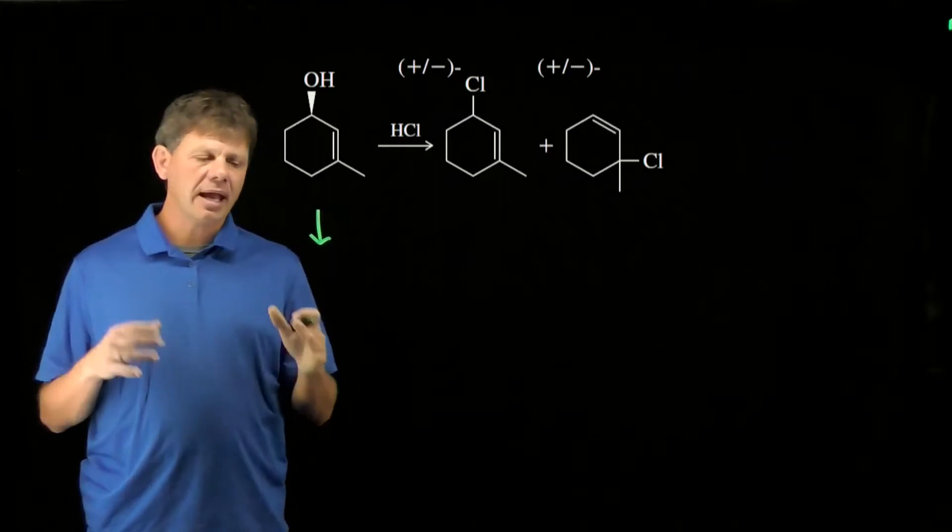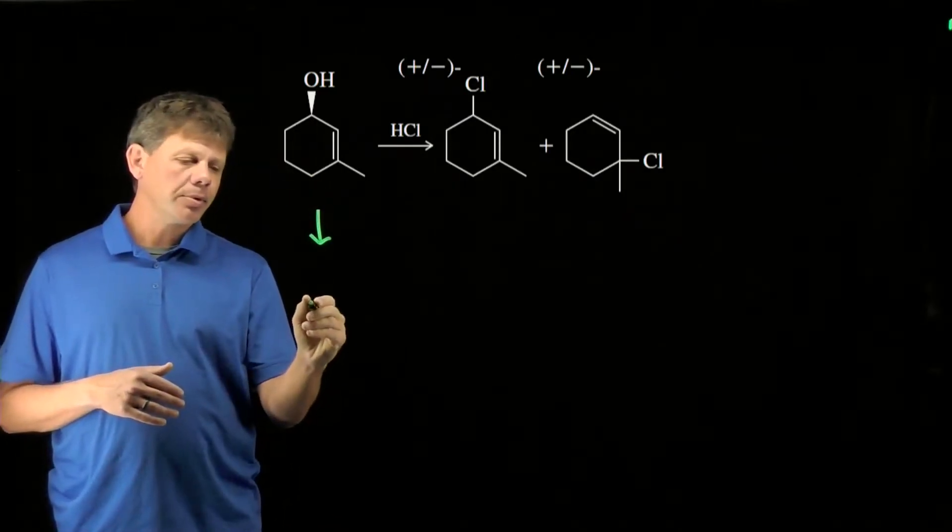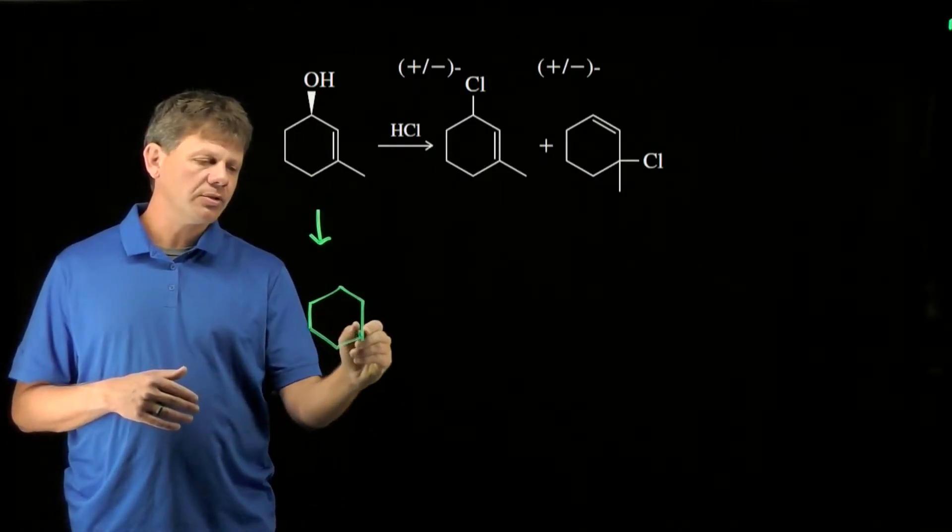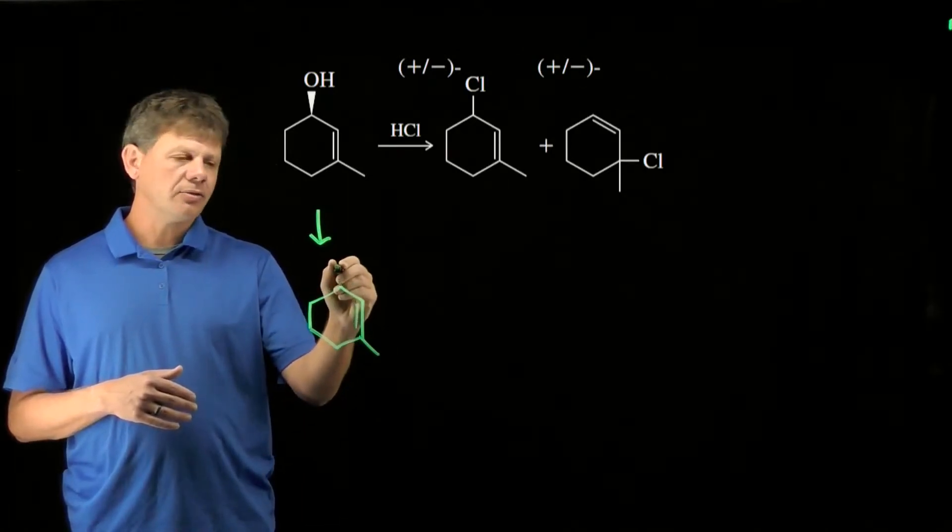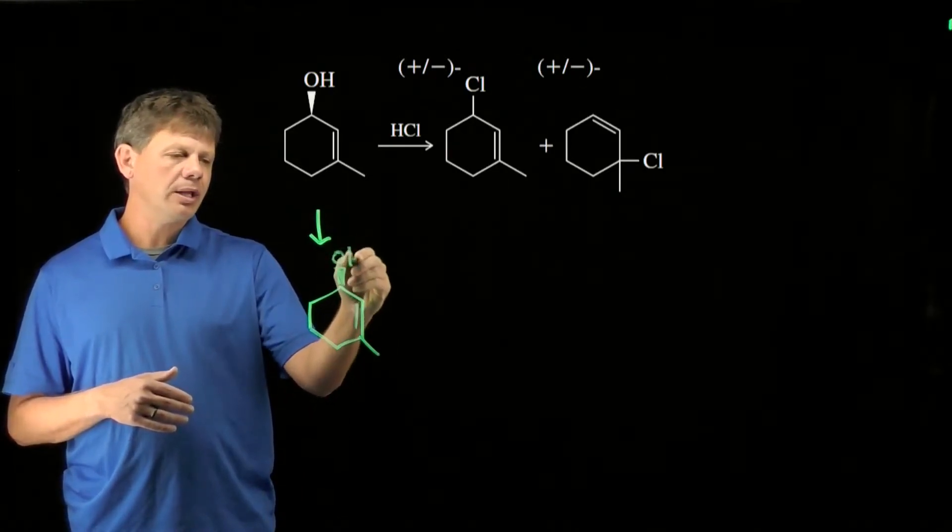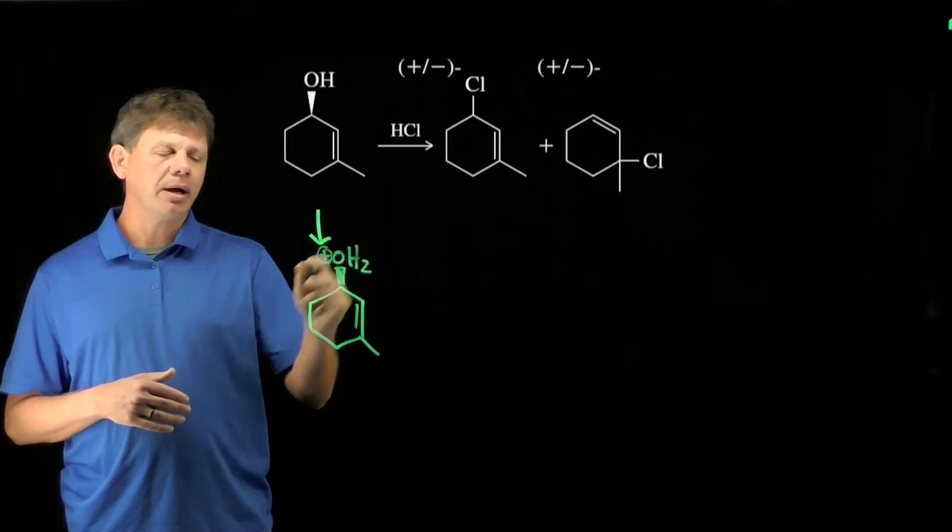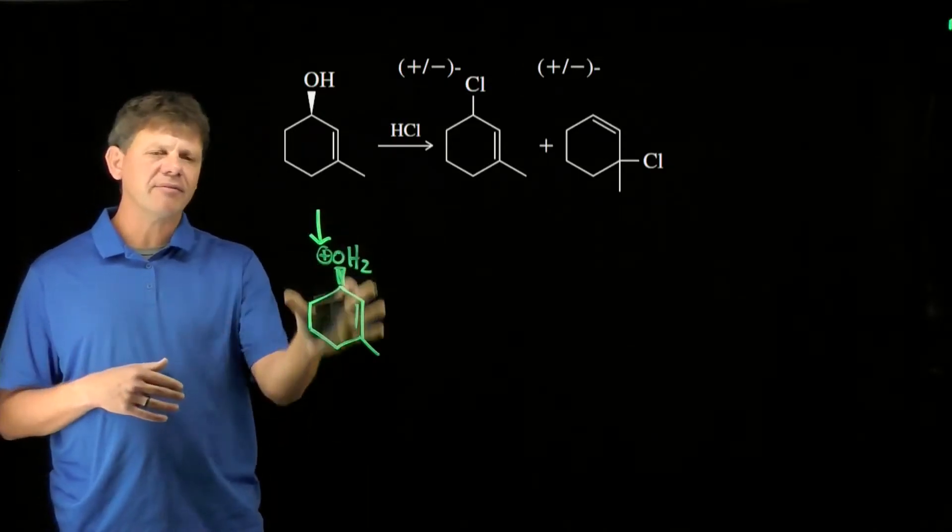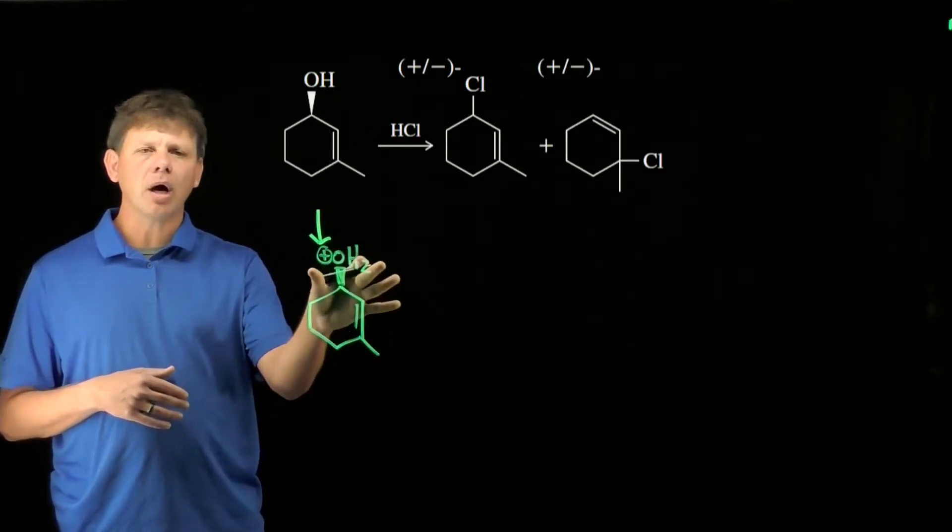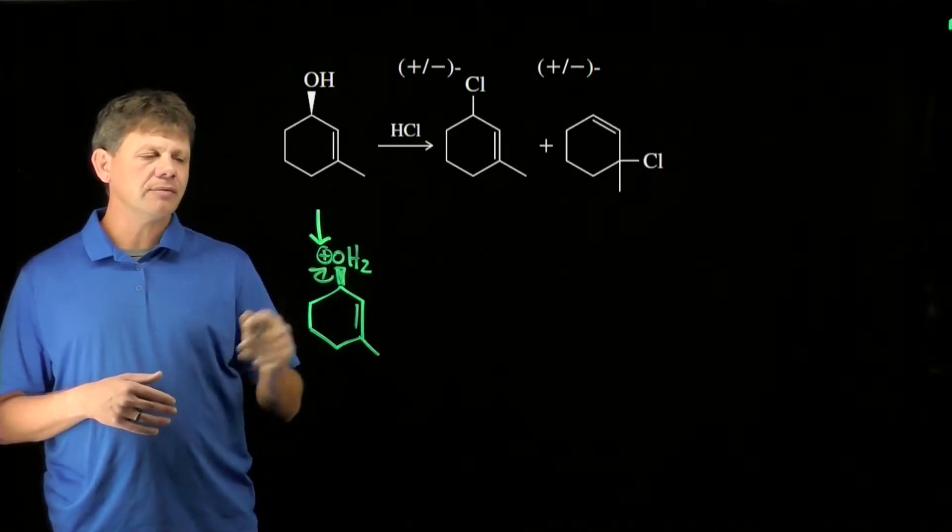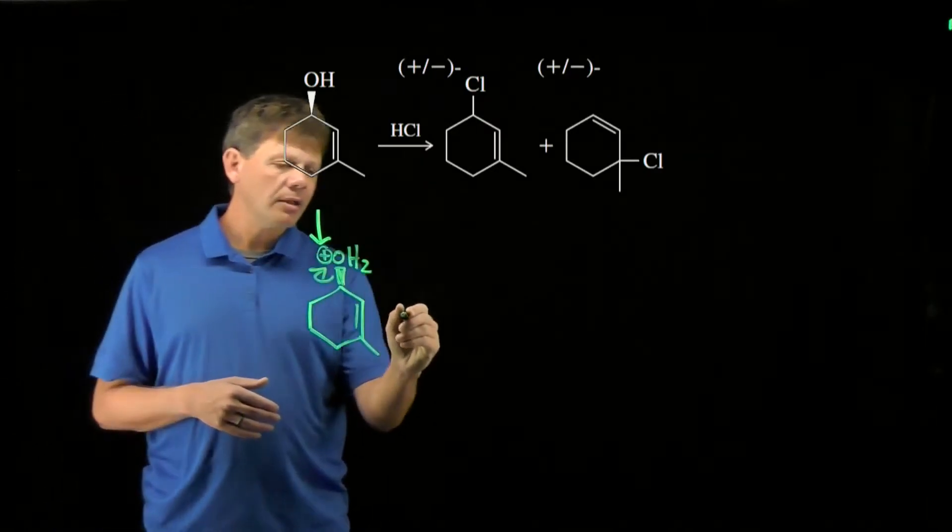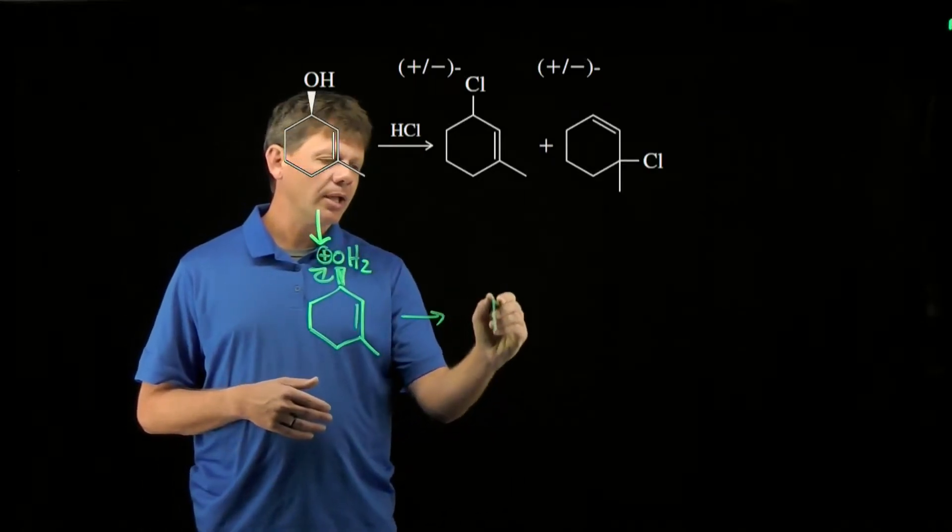We're not going to draw each arrow, but it's going to start by protonating the hydroxyl group to make a good leaving group. That hydroxyl group as protonated here, we now have a positive charge. Essentially, we have a water molecule contained within this. Water is a good leaving group. Good leaving groups leave. When it does, we're going to make a carbocation.